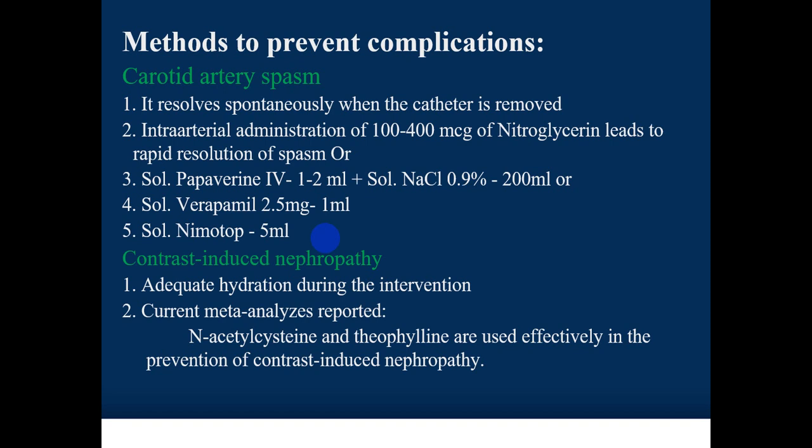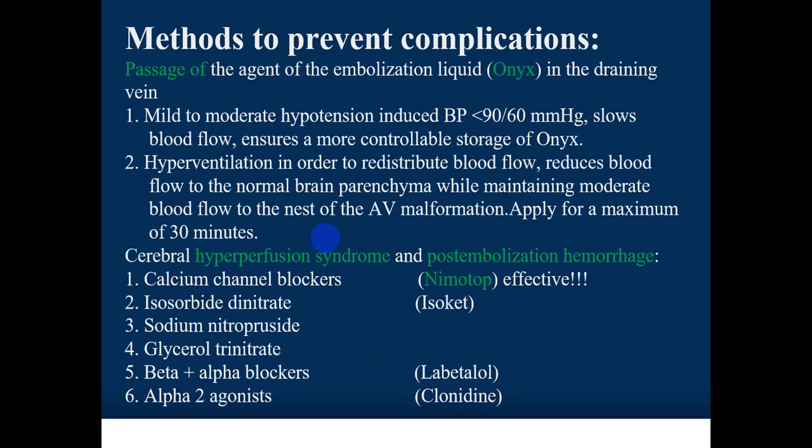For contrast-induced nephropathy prevention, adequate hydration during the intervention is essential; current meta-analyses report that acetylcysteine and theophylline are effective preventive agents. To prevent passage of embolic agent into the draining vein, induce hypotension below 90/60 mmHg to slow blood flow and ensure more controllable delivery of the embolic material. Brief hyperventilation can be used to redistribute blood flow, reducing flow to normal brain parenchyma while maintaining moderate flow to the AVM nidus.